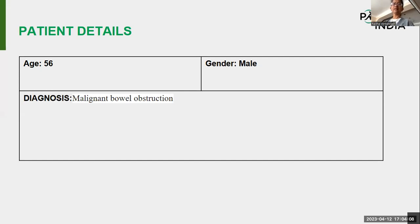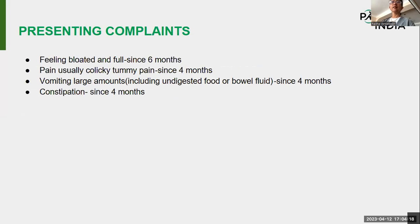The case we have here is a male patient with a diagnosis of malignant bowel obstruction. The presenting complaints were feeling bloated and full since six months, pain — usually colicky tummy pain — since four months, vomiting large amounts including digested food or bowel fluid since four months, and a history of constipation for four months.